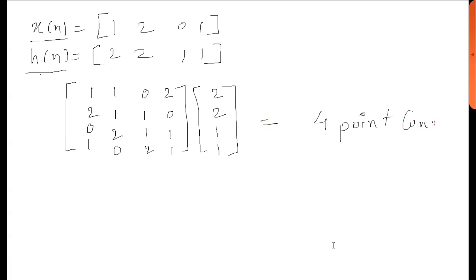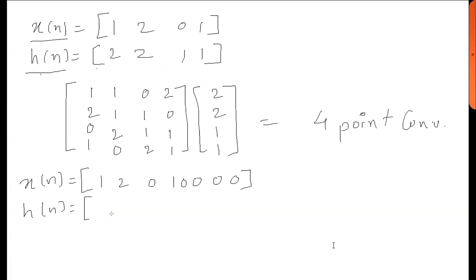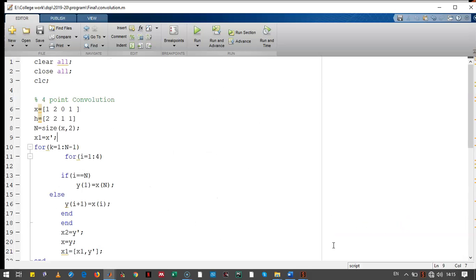This is a four-point convolution because each signal has only four samples. In the eight-point convolution, xn will be padded with four more zeros, and hn will also be padded with four more zeros. In a similar way, the convolution between these two padded signals will be an eight-point convolution.